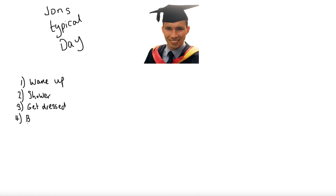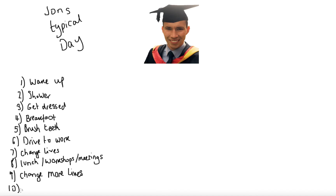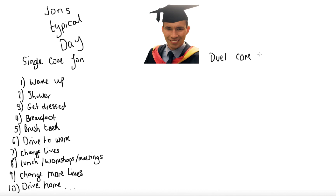So: I wake up in the morning, get a shower, get dressed, make breakfast, brush my teeth, drive to work. I change lives all day up until about lunchtime when I have workshops and meetings, sometimes lunch, then change more lives in periods five and six, and then drive home. I'm going to class that as what I call single core John — being single core, everything happens sequentially in order, one after another.